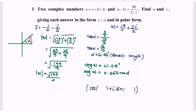Express your answer in 3 significant figures. As a conclusion, w equals (square root of 194 over 2) multiplied by (cos(0.367) plus i sin(0.367)). That is the answer for w in polar form.